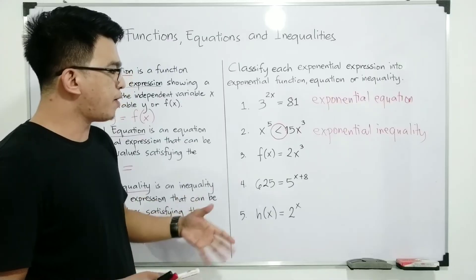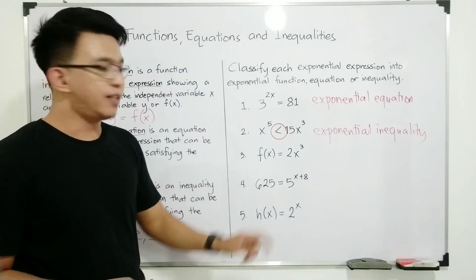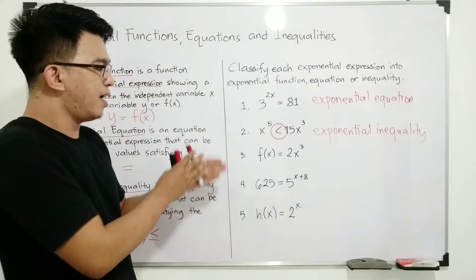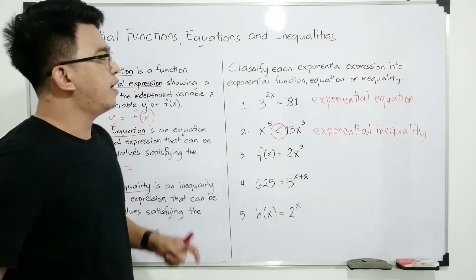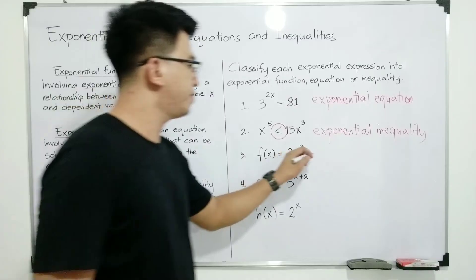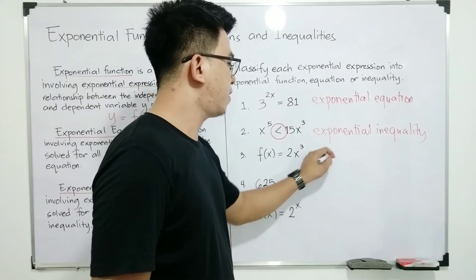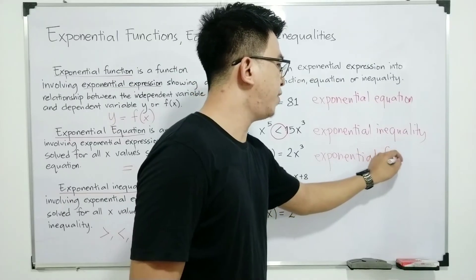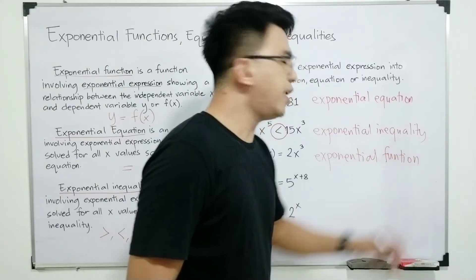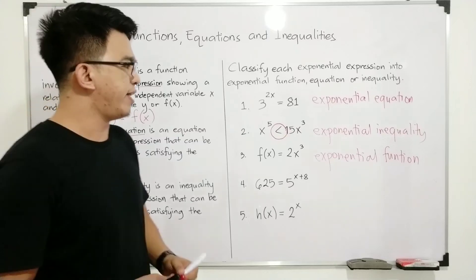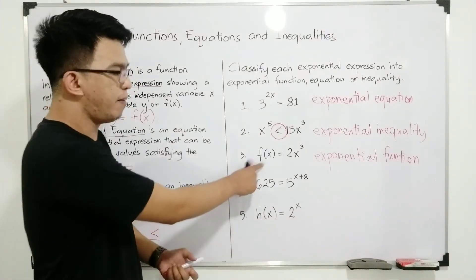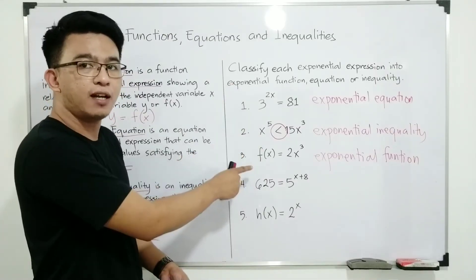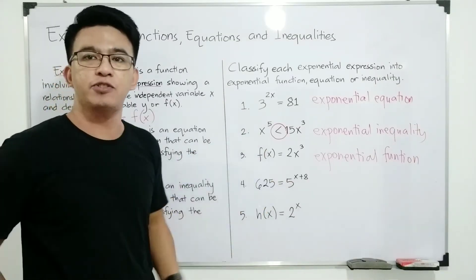Now let's move on to number 3. We have f of x is equal to 2x cubed. It's clearly visible that this one is under exponential function, because we have a function notation — which is f of x. Since it uses function notation, think of it as exponential function.